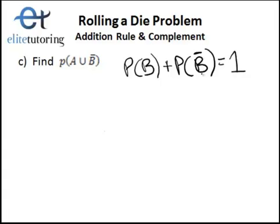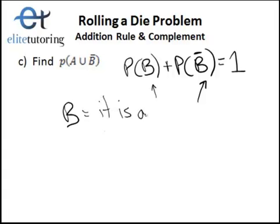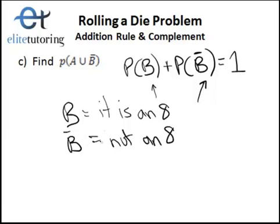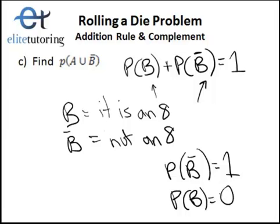The probability of B plus the probability of not B equals 1. Because if it doesn't satisfy B, then it would satisfy not B — all outcomes must either fit into B or not B. That's why the probability of adding those two together gives you 1. In this problem, event B means rolling an 8. So not B means not an 8. The outcomes 1, 2, 3, 4, 5, 6 — none of those are 8, so the probability of not B is 1. This makes sense because the probability of B was 0 since it was impossible, and so this equation holds true.